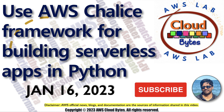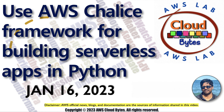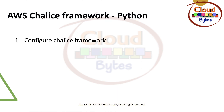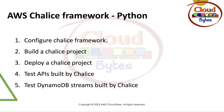Hello and welcome to AWS Cloud Bytes. I'm your host Bhavesh Kumar. Today we are going to talk about the AWS Chalice Framework and see how it can be used to build serverless applications in Python. We'll cover how to create a Python project using Chalice, how to configure, build, and deploy a Chalice project, test the APIs built by Chalice, test a DynamoDB stream built by Chalice, and delete the project.